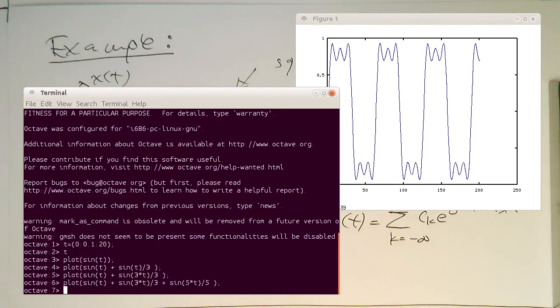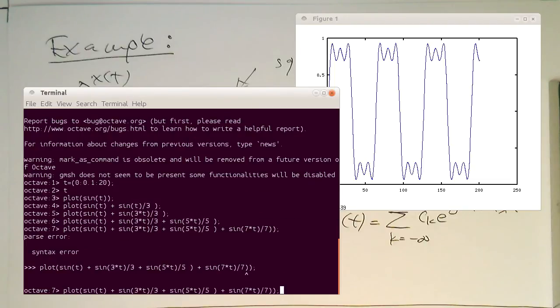We see the ripples on top are becoming smaller. If we have sine of 7 times t divided by 7, that should give us already quite a nice square wave. Now we've got a syntax error here.